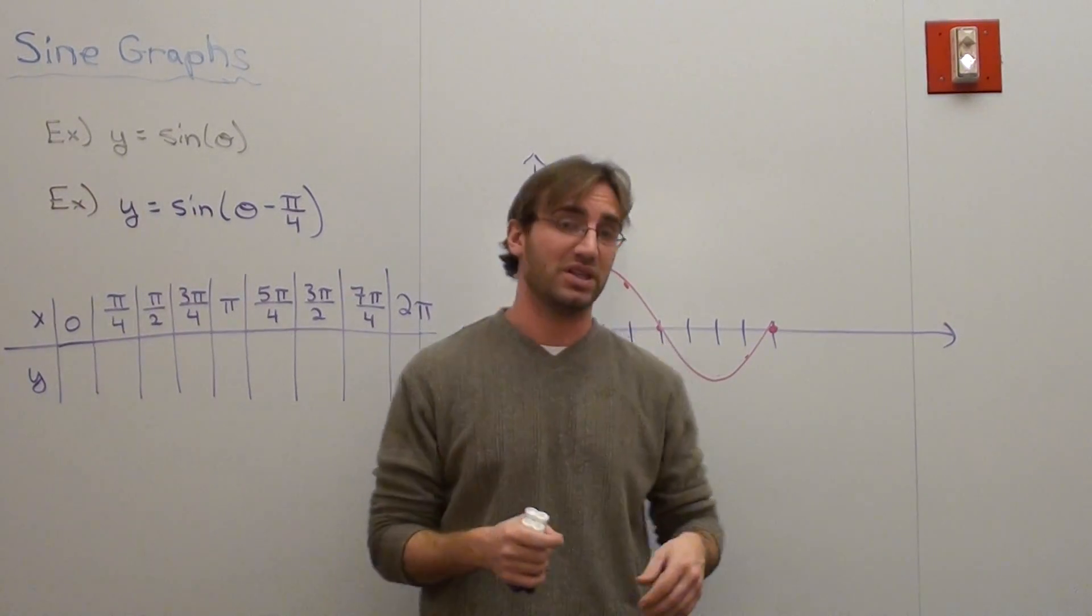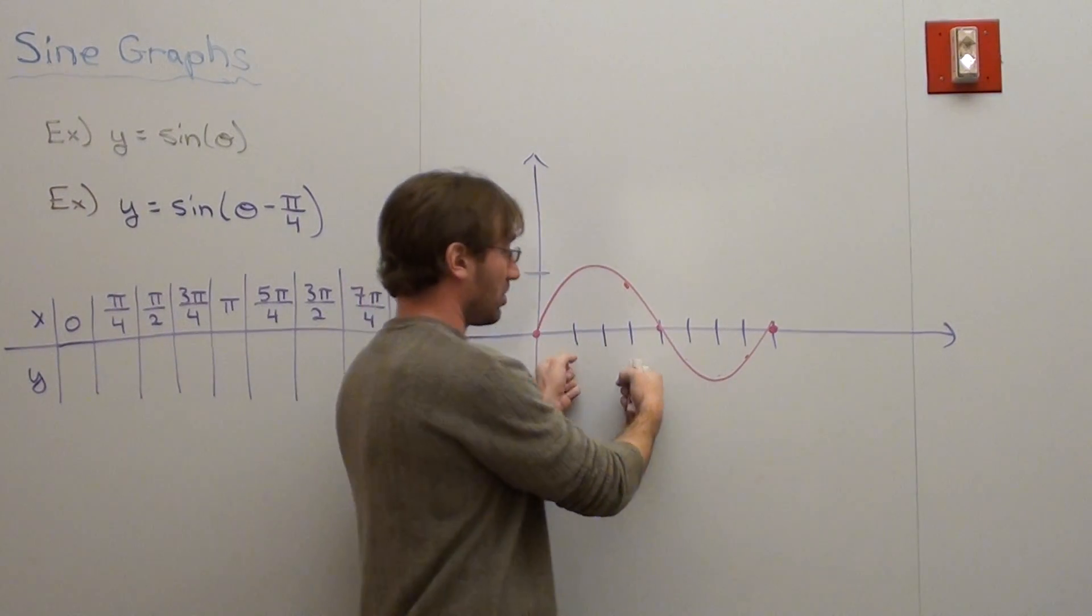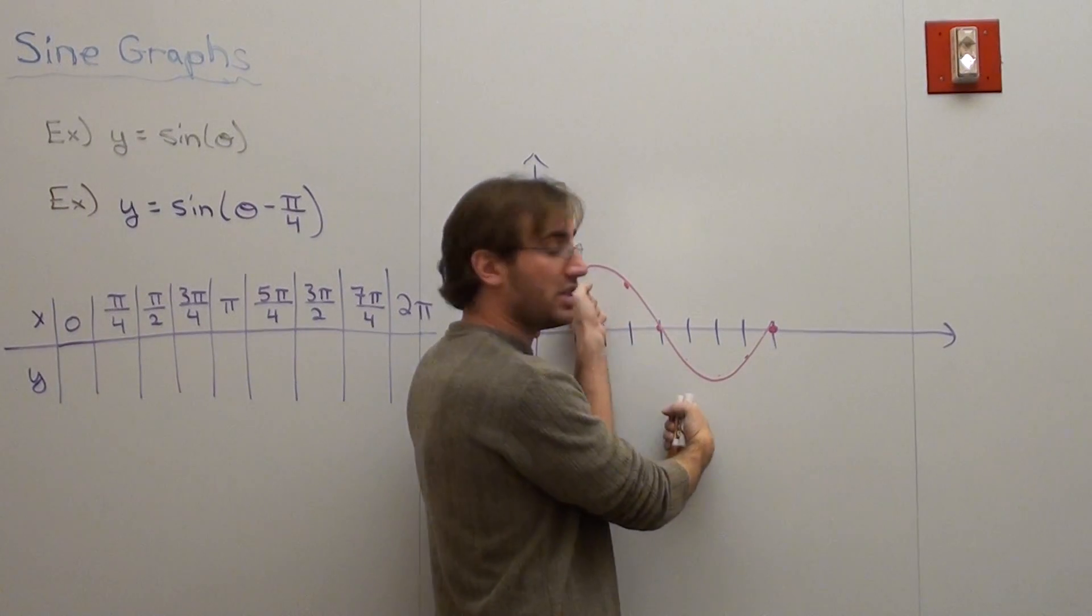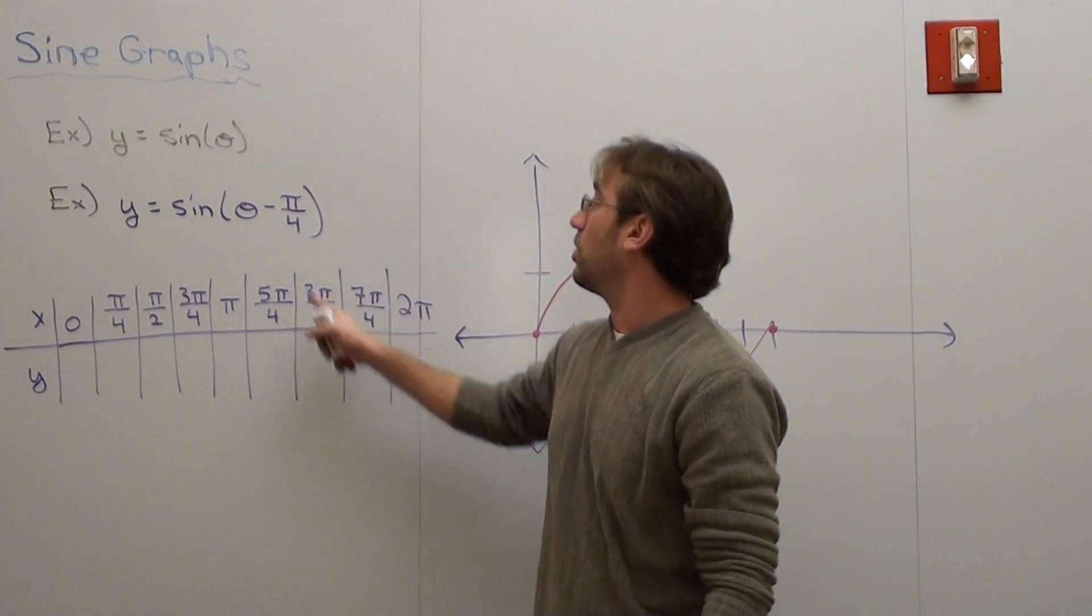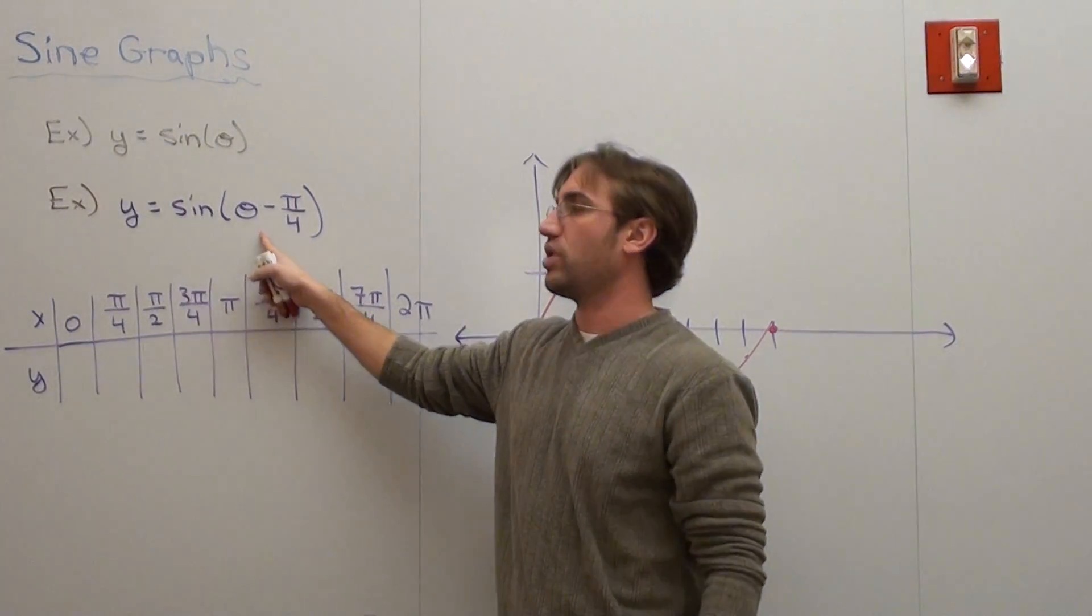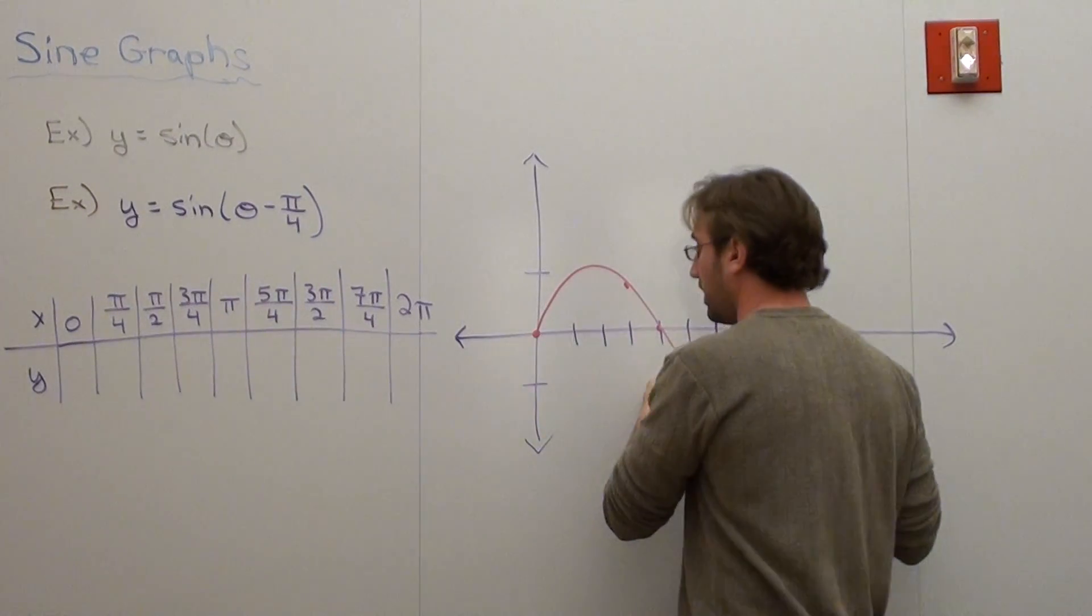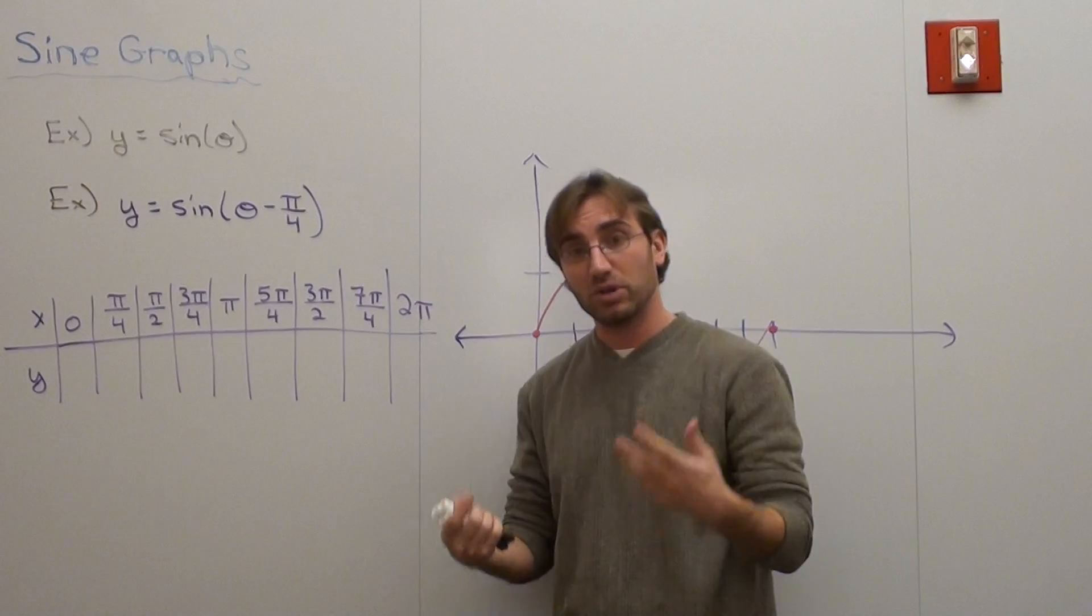Basically what phase shift means is I've got this graph and I'm either going to take it as one piece and move it either to the right or to the left. It depends on what you're adding or subtracting. If you're subtracting, you're moving it to the right, and if you're adding, you're moving it to the left. I'm going to show you.